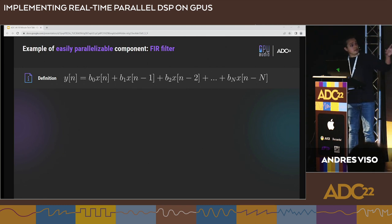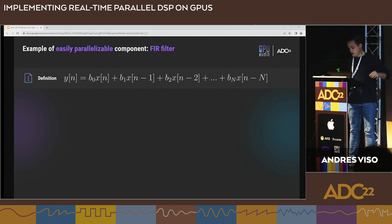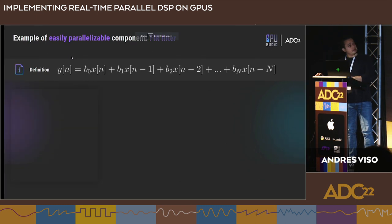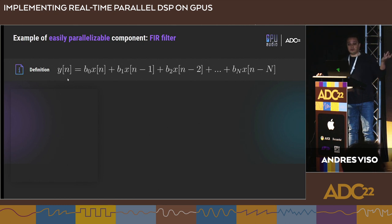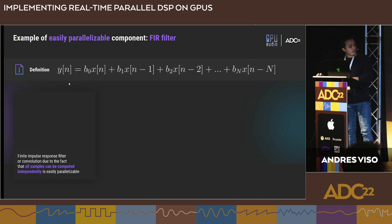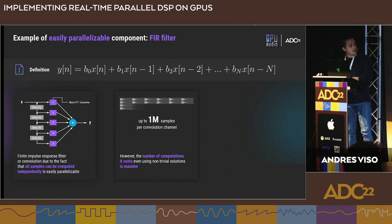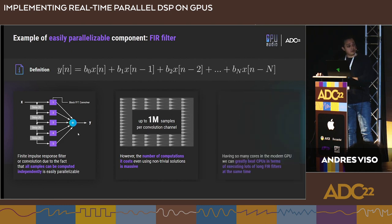The FIR filter is essentially a convolution between the impulse response and an input signal. The good thing is there is no data dependency — each position of the output only depends on the input it's reading and the impulse response. So we can literally launch one thread for each output position and compute all positions in parallel. Since the GPU allows hundreds or even thousands of threads, we can do this very easily, and the GPU can beat the CPU by reducing the algorithm's complexity by one order of magnitude.